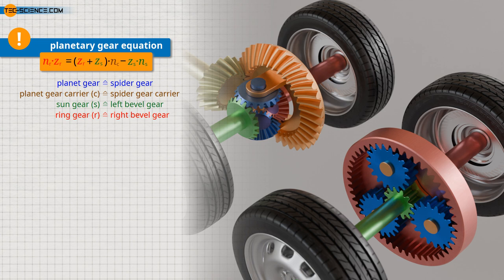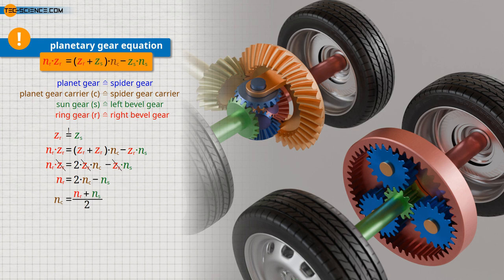The linked video shows the derivation of this equation for planetary gears in detail. We will now apply the Willis equation to the differential gear. The left and right bevel gears each have the same number of teeth. Using this relationship in the planetary gear equation and simplifying, we solve for the speed of the carrier and obtain the formula shown. We can now see mathematically that the speed of the carrier is always equal to the average speed of the left and right wheel — in other words, the speed of the wheels is always symmetrically different from the speed of the carrier. So if one wheel rotates faster than the carrier when cornering, the other wheel will rotate slower to the same extent.